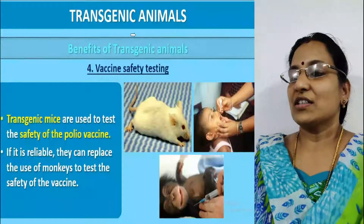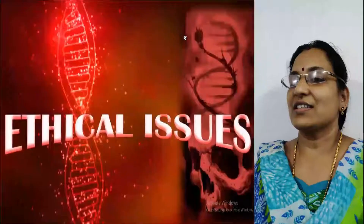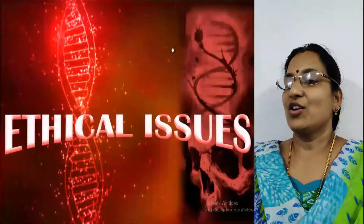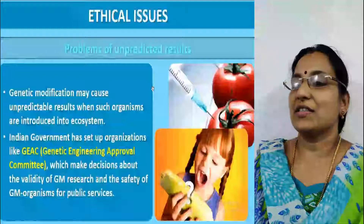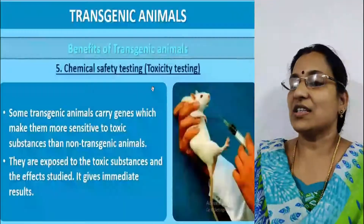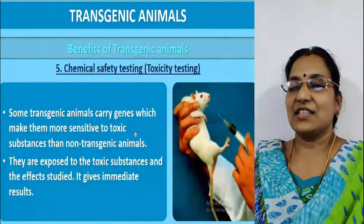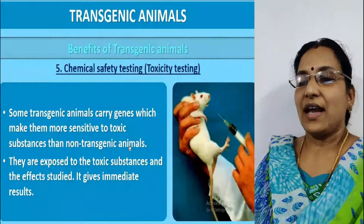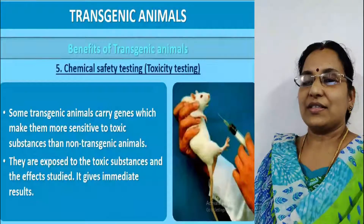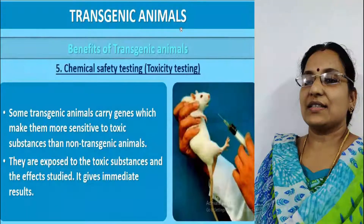The fifth benefit is toxicity testing. To test the toxicity of substances, we use transgenic animals. Some transgenic animals carry genes which make them more sensitive to toxic substances than non-transgenic animals. They are exposed to toxic substances, the effects are studied, and results are obtained immediately.